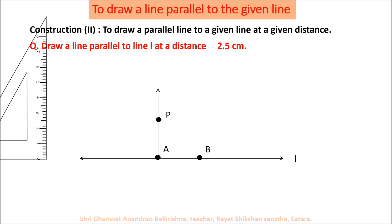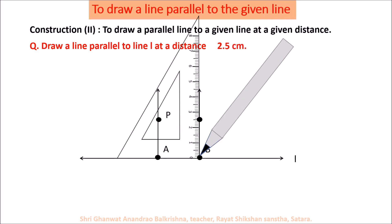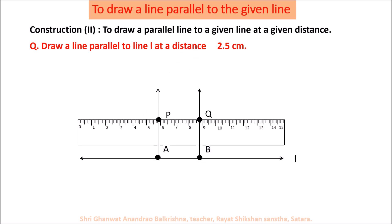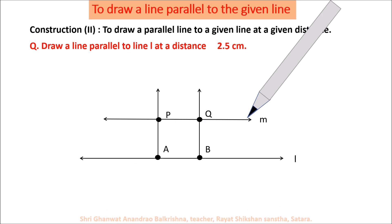By the same method, use the set square again to draw a perpendicular at point B. On this perpendicular, take another point Q such that it is exactly at a distance of 2.5 cm from line L. Now use a ruler and draw a line passing through point P and point Q. Name this line M. So we can say that line M, passing through points P and Q, which is exactly at 2.5 cm from line L, is parallel to line L.